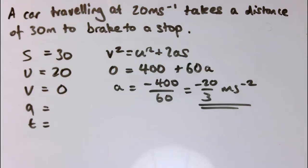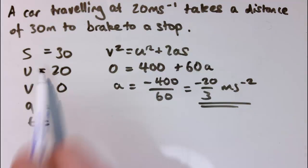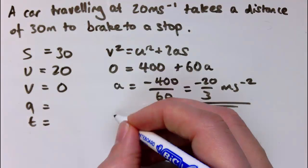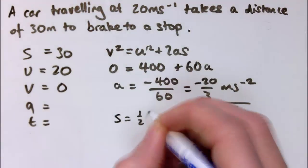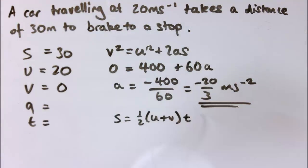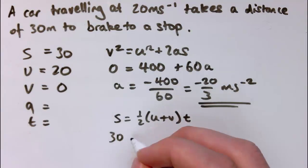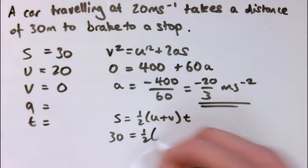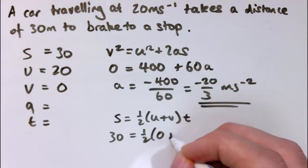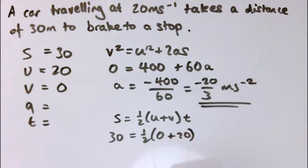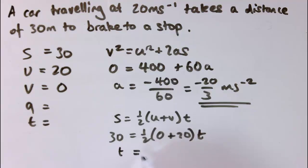Now finding t using the equation with s, u, v, and t: s equals half (u plus v) times t. So 30 equals half times (20 plus 0) times t, giving 30 equals 10t, so t equals 3 seconds.